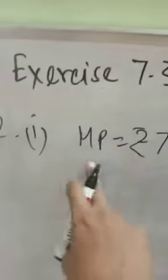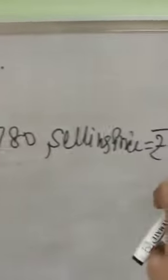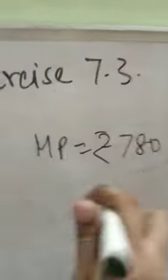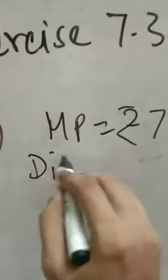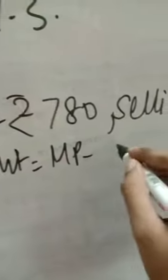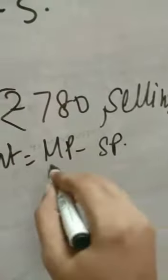Next exercise 7.3: mark price 780 and selling price 721.50. We have to find out discount and discount percentage. If you subtract selling price from mark price you get the discount. The discount is MP minus SP, mark price minus selling price.